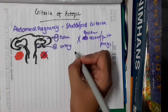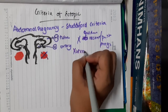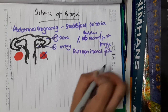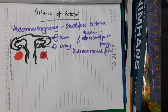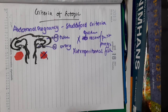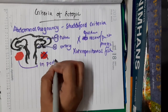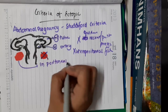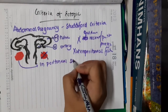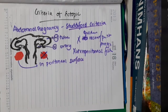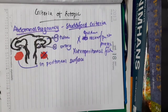There should be no uteroperitoneal fistula, because if there is one, a uterine pregnancy might be mistaken for a peritoneal one. And you should be able to see the pregnancy on the peritoneal surface. These are Studdiford's criteria for abdominal pregnancy.